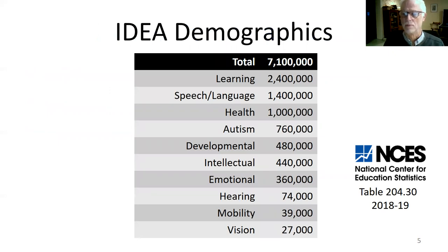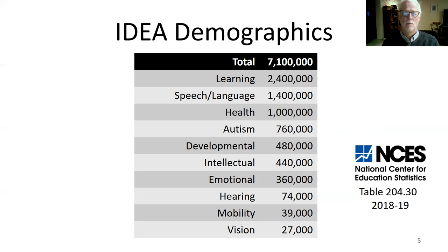If we look at just IDEA, there are some demographics from the National Center for Education Statistics. The total number was 7.1 million. Of that group, about 2.4 million have a learning disability, 1.4 million have a speech or language disability, about 1 million have health issues, and 760,000 are on the autism spectrum. I should mention this autism number — 760,000 — is about twice what it was five or six years ago, so that number is actually growing.